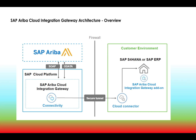All data mappings and data translations are done in SAP Ariba Cloud Integration Gateway, and then the data is sent to SAP Ariba. Data can be sent using either a SOAP channel or an OData channel from SAP Cloud Integration Gateway to SAP Ariba.